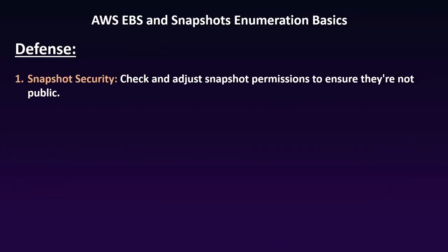The first defense is snapshot security. AWS provides the capability to create snapshots of EBS volumes, which are valuable for backup and recovery. To enhance security, regularly review and adjust permissions associated with these snapshots. By default snapshots are private, but if not configured correctly they can be made public, which poses a significant security risk. Ensure only authorized IAM users or roles have permissions to create, delete, and modify snapshots.